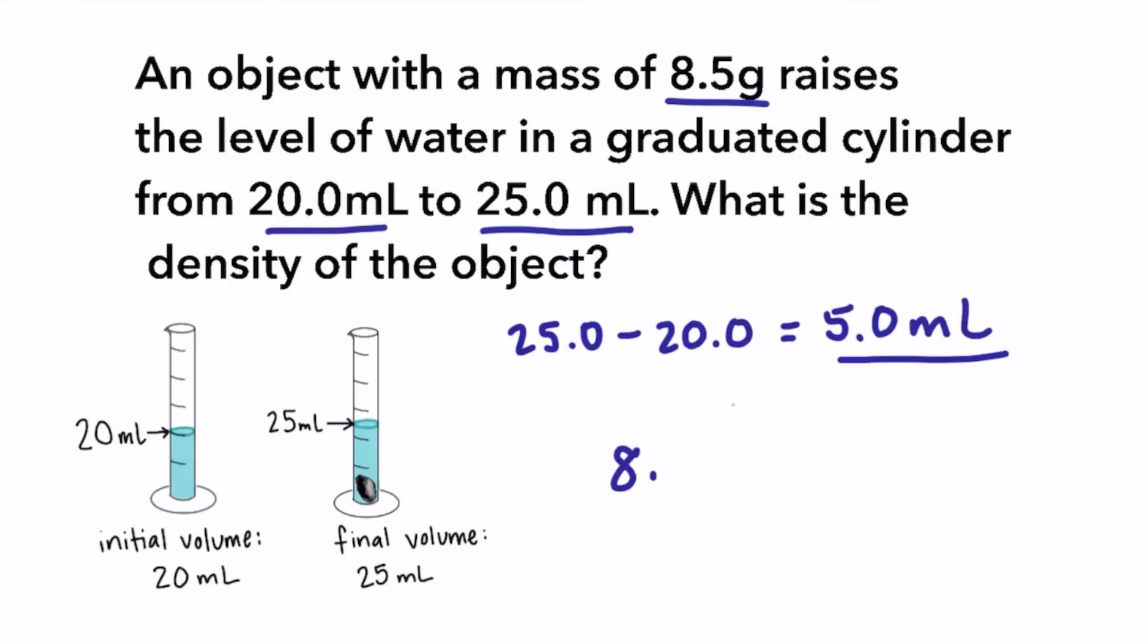To calculate the density, we take our mass, 8.5 grams, and divide it by the volume, 5 milliliters. Our final answer is 1.7 grams per milliliter.